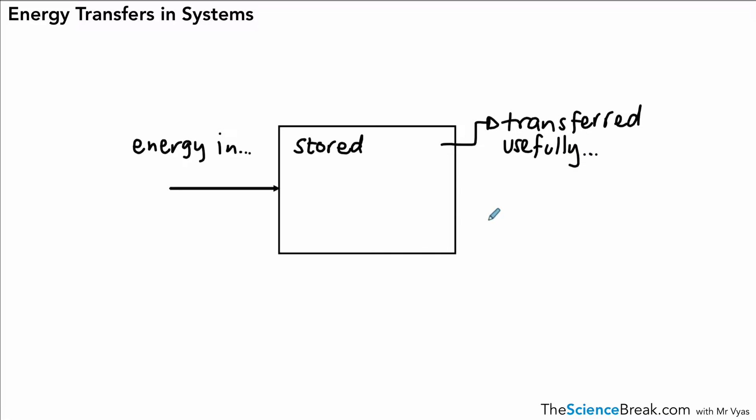It could also be what we call dissipated. I've done three arrows there because dissipated means spread, but it could be spread to the surroundings, and that's pretty much usually as heat, or at least eventually as heat. So these are the three kind of things we talk about happening when we have a system of energy transfers.